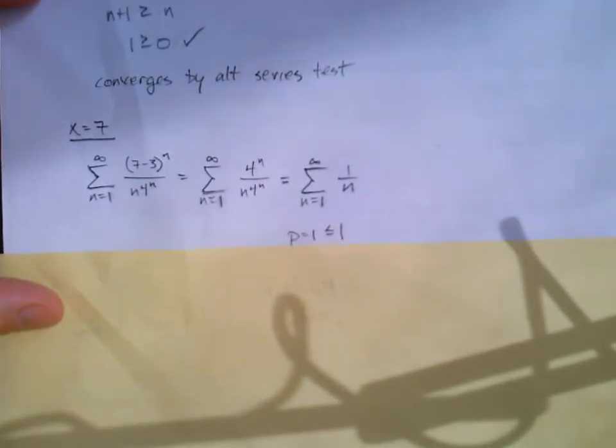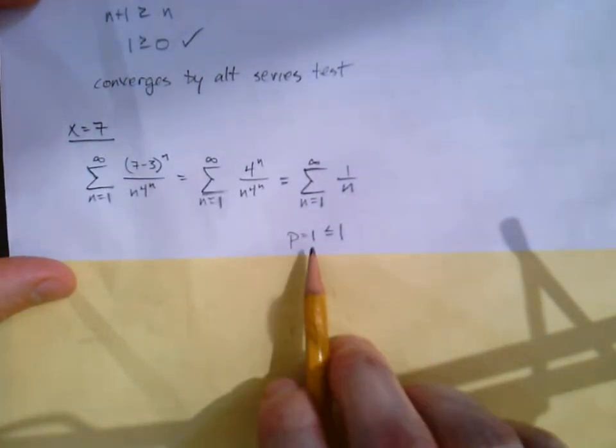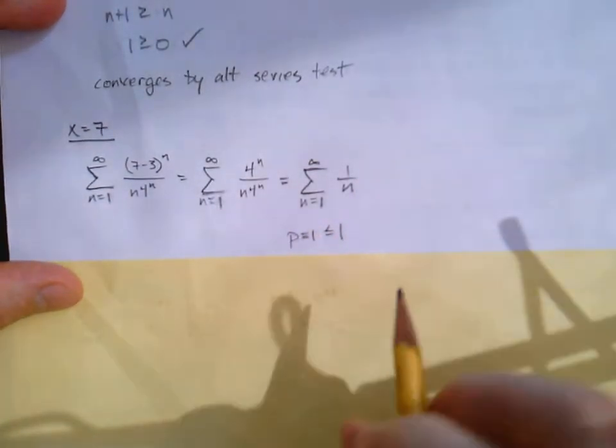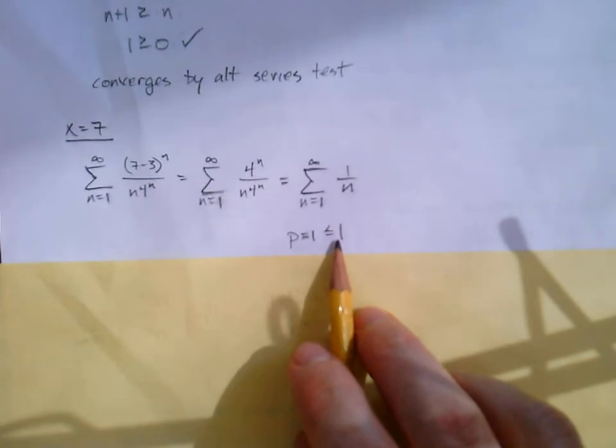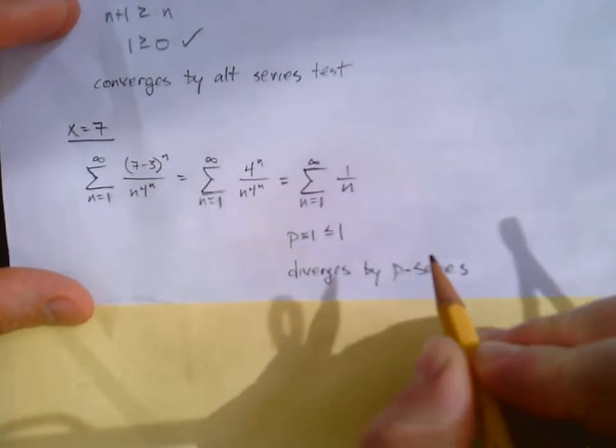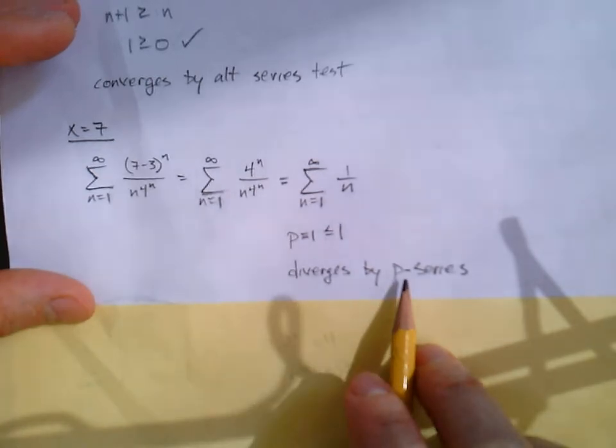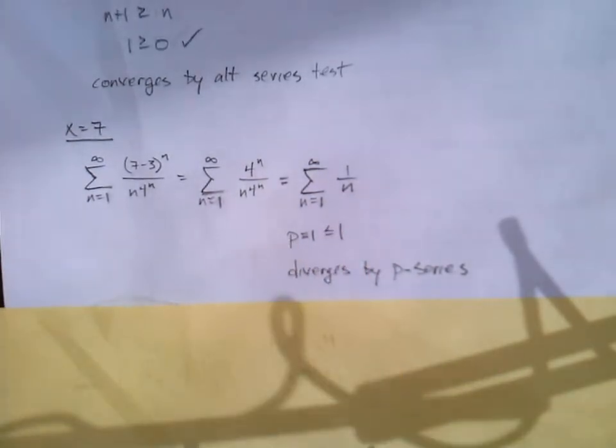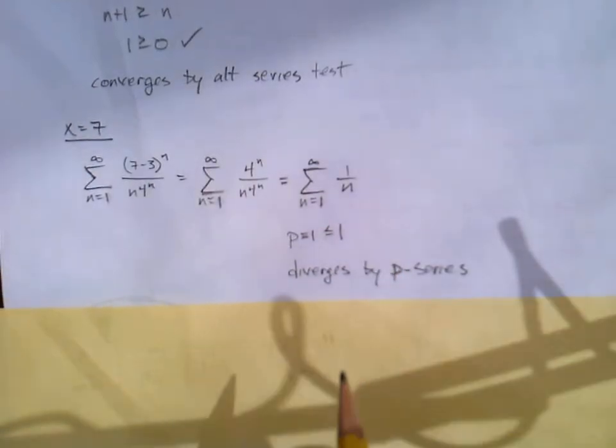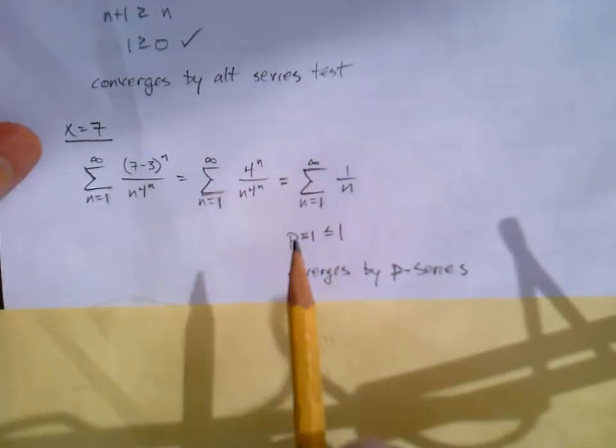Hey, 1 over n. What's going on with that? Well, if you thought of the p series, that's p equals 1, which is less than or equal to 1. So that diverges by p series. Or you might just say it diverges by the harmonic series. That is the harmonic series. Either way, so it diverges at this endpoint.